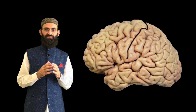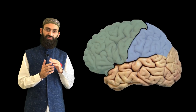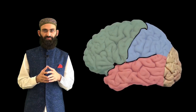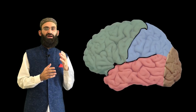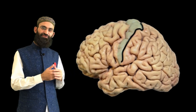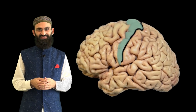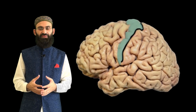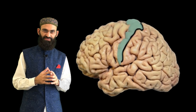The central sulcus divides the frontal lobe from the parietal lobe, while the lateral sulcus marks the upper boundary of the temporal lobe. The occipital lobe is separated from other lobes through an arbitrary line. The gyrus in front of the central sulcus is called the precentral gyrus, and it serves as the primary motor cortex — the command and control center for voluntary movements.